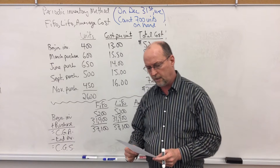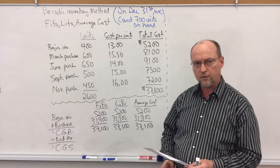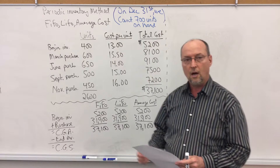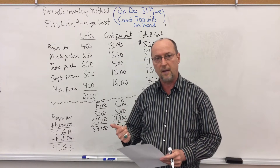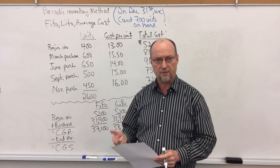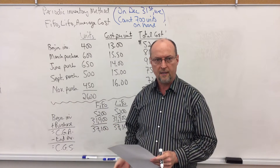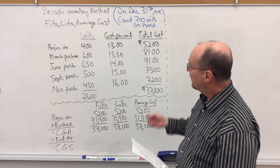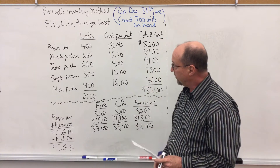We're going to learn how to calculate ending inventory and cost of goods sold under the periodic method using the average cost method. Very, very simple. Let's look at the information.